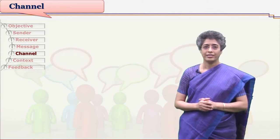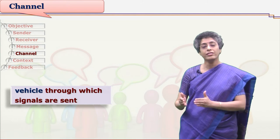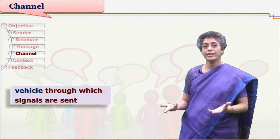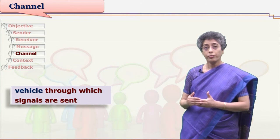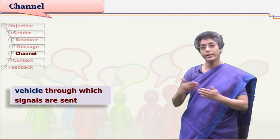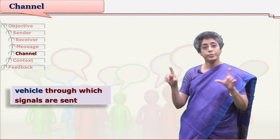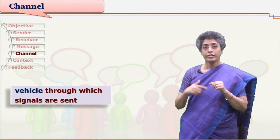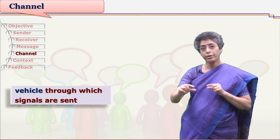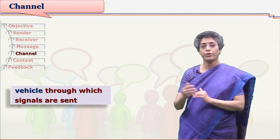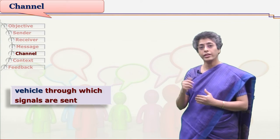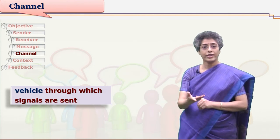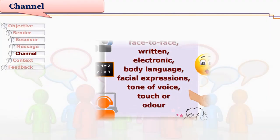A channel is a vehicle through which signals are sent. Our message is a set of signs and symbols, and to send signals from sender to receiver there should be some channel. When we talk face to face, our voice is carried by air, so air becomes a channel. Sometimes we talk over telephone or cell phone, or send emails, using various vehicles as channels of communication.